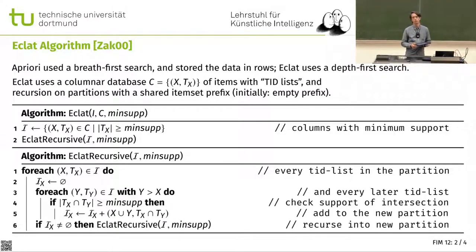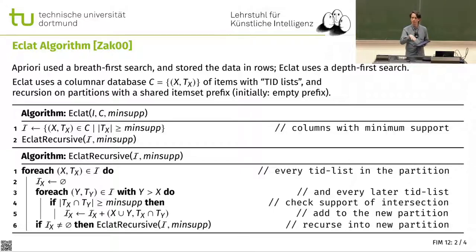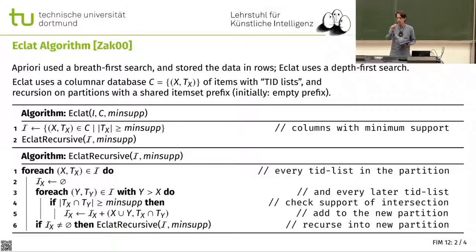That led to an algorithm known as ECLA, which had considerable improvements over Apriori. But it also changed the logic of the algorithm — it's not just Apriori with column stores. To make good use of this, we need to work column-wise and not row-wise. Apriori worked by repeatedly scanning the data in rows, so we can't just run Apriori on this. Instead of Apriori's breadth-first, level-wise approach — beginning with one-item sets, then two-item sets, and so on — we now do a depth-first search for frequent item sets.